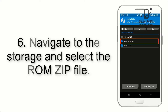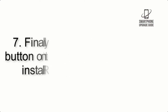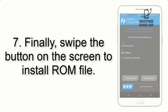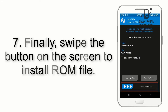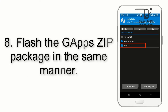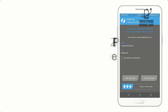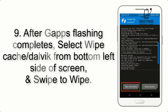Step 6: Navigate to the storage and select the ROM zip file. Step 7: Finally, swipe the button on the screen to install the ROM file. Step 8: Flash the GApps zip package in the same manner. Step 9: After GApps flashing completes, select Wipe Cache and Dalvik.